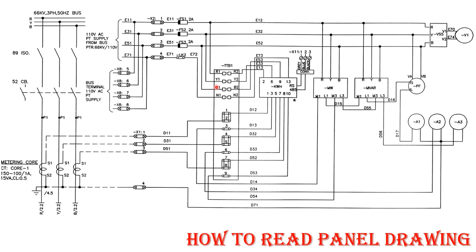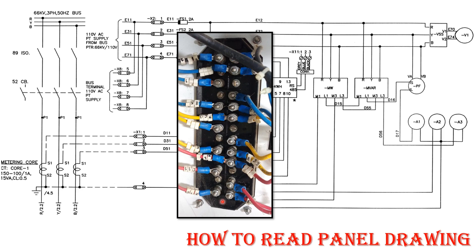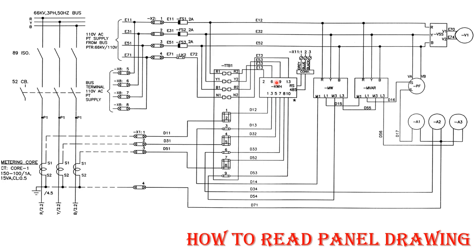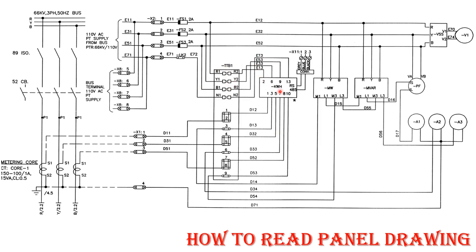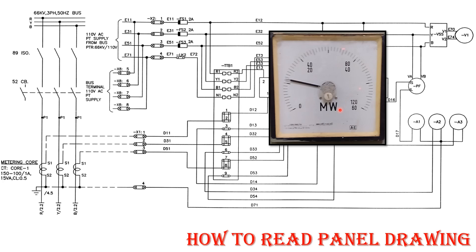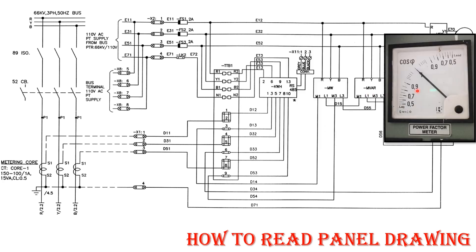Another use of PT wiring is for the energy meter. The three-phase wires go through a TTB — test terminal block. On one side of the TTB the PT wires for R, Y, B phase and neutral come in, and on the other side they go into the energy meter. The wire codes at this point are 73, 53, 33, and 13. PT wires are also used for megawatt meters, MVR meters, and power factor meters.